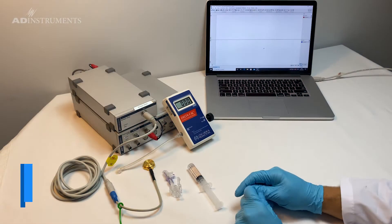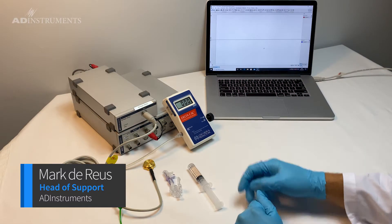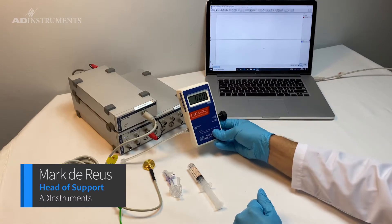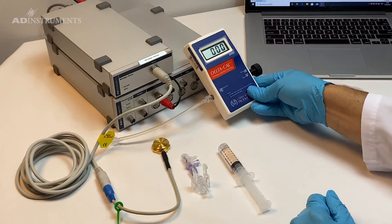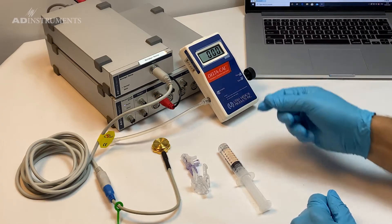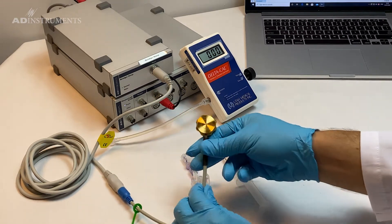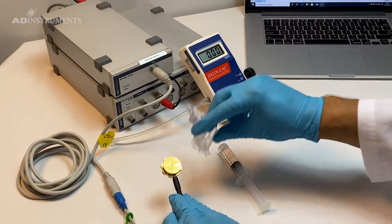Okay, now I'm going to demonstrate how to calibrate a pressure transducer using the Delta Cal transducer simulator. I have an MLT 844 which comes with a replaceable clip-on dome.